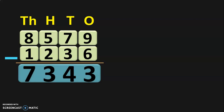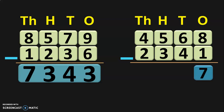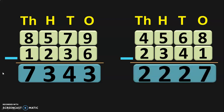The answer in subtraction is called the difference. Let us do another example. Here we have 4,568 minus 2,341. Write down the place values and begin the subtraction from the ones place: 8 minus 1 is 7. Next, tens place: 6 minus 4 — before 6: 5, 4, 3, 2. Hundreds place: 5 minus 3 — before 5: 4, 3, 2. Thousands place: 4 minus 2 — before 4: 3, 2. So the difference is 2,227.